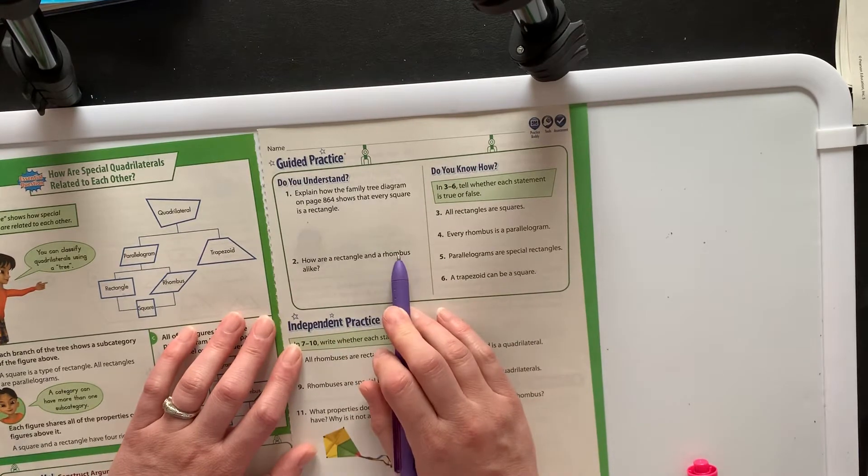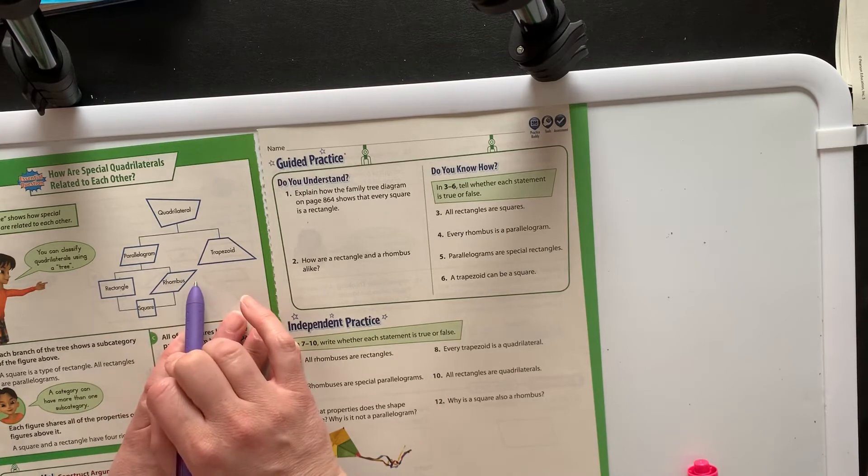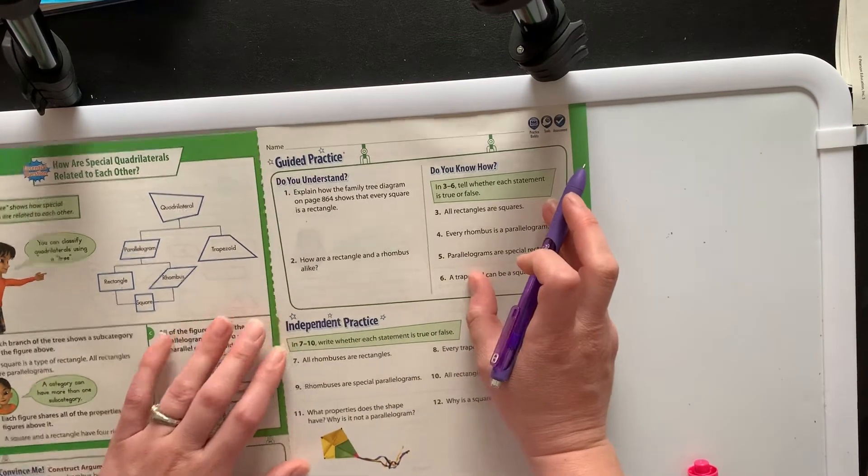How are a rectangle and a rhombus alike? They both have two sets of parallel lines is what I would probably say. And then we get into the true and false.